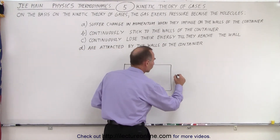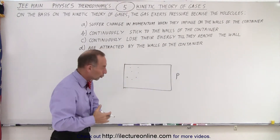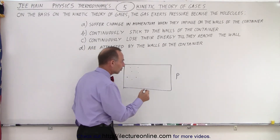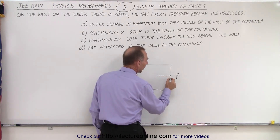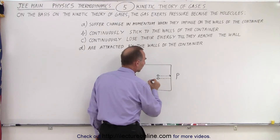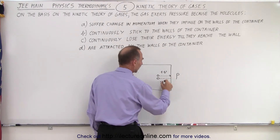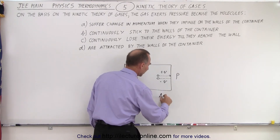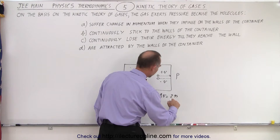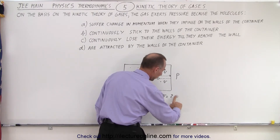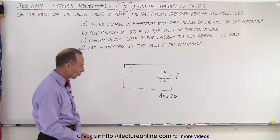So what exerts pressure at the wall of the container? What creates pressure is the molecule bumping into the wall and then going back in the other direction at the same velocity. So we have a plus v velocity here and minus v velocity here, so that the magnitude of delta v is equal to two times v.